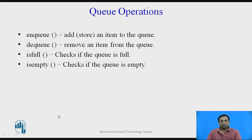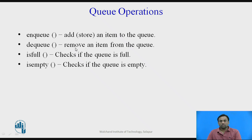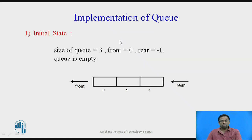Now we will see the queue operations. There are two main basic operations: enqueue and dequeue. Enqueue is where data is added into the queue, and dequeue is where an element is removed from the queue. While doing an enqueue operation we have to check the condition whether the queue is full. During a dequeue operation we check the is-empty condition, that is whether the queue is empty or not.